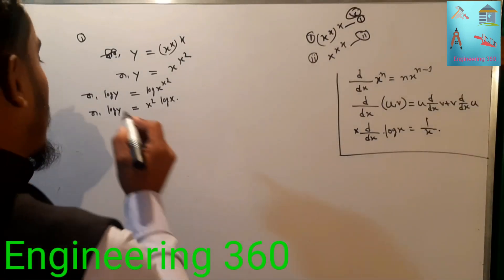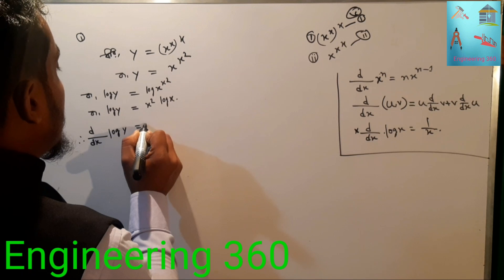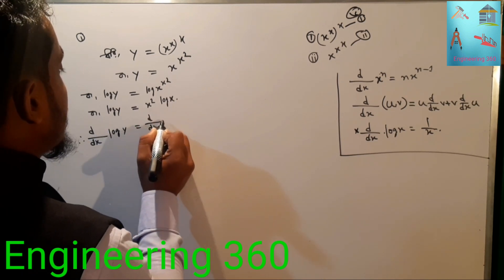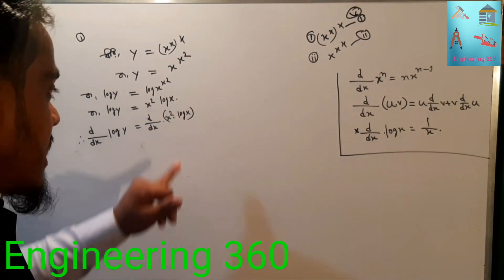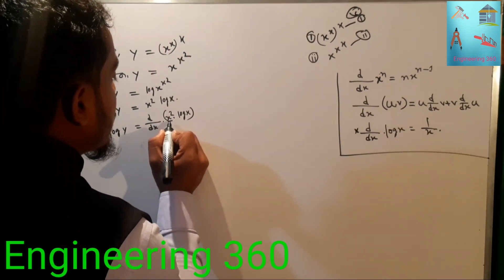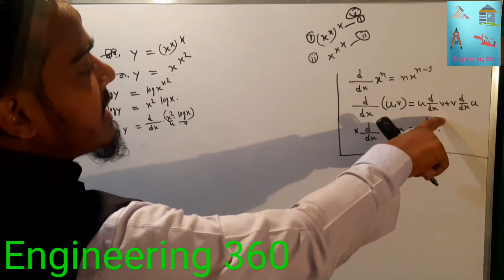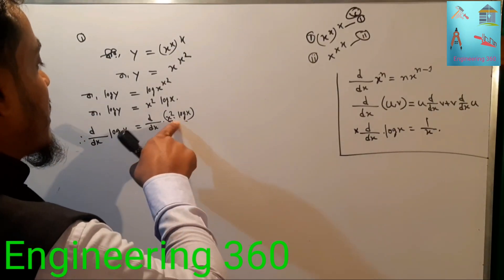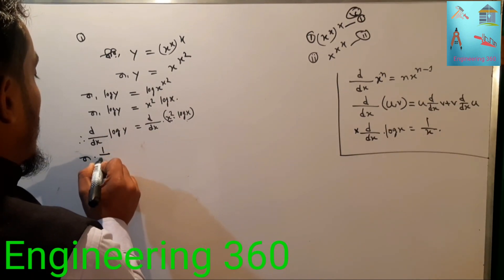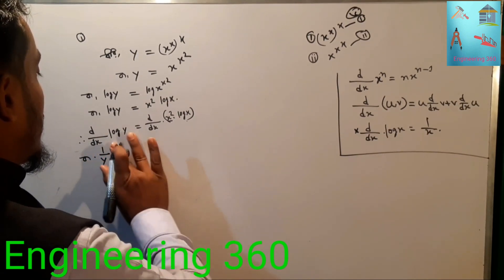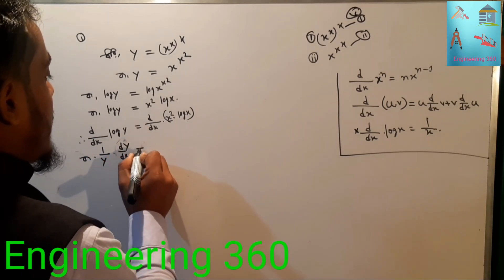Differentiating the left side: d/dx of log y gives 1 by y times dy/dx. On the right side, we apply the product rule to x squared times log x, since it is a product of two functions u and v.